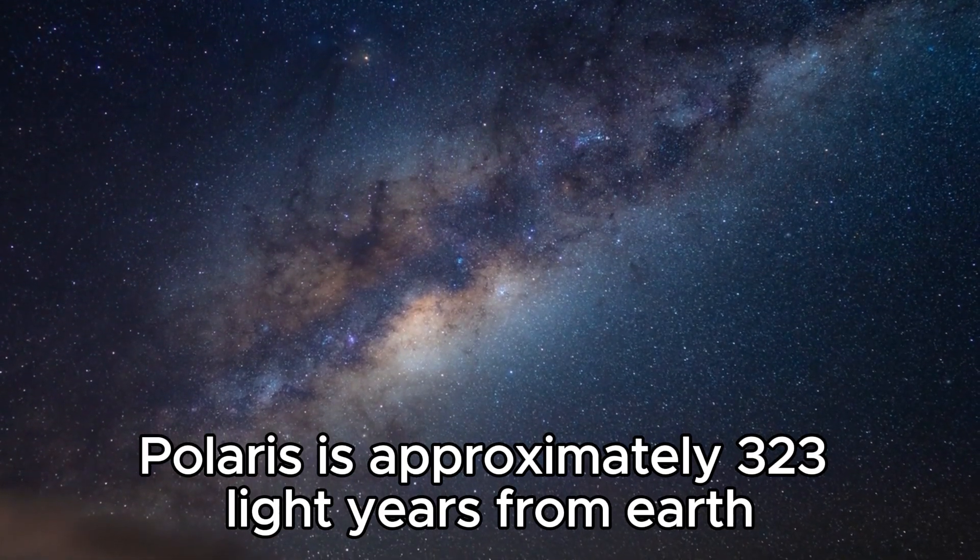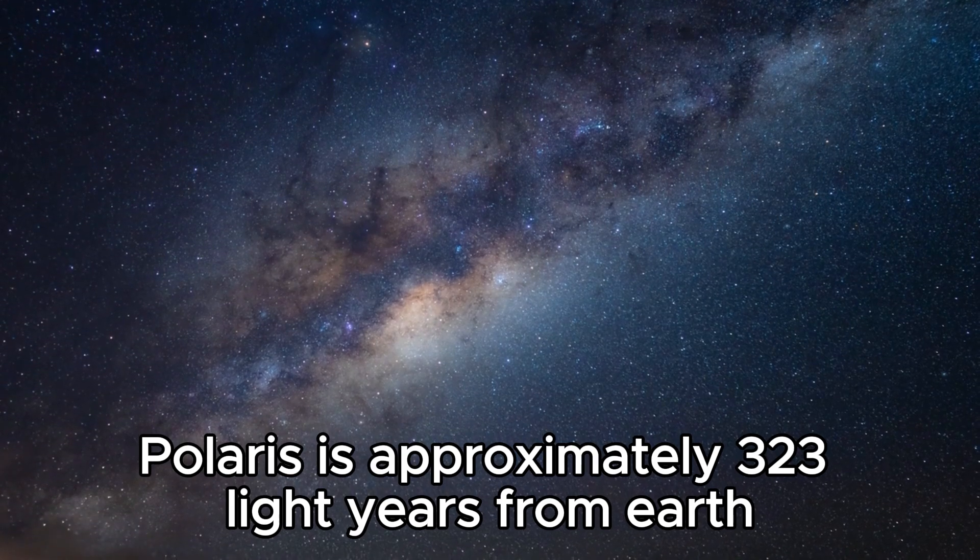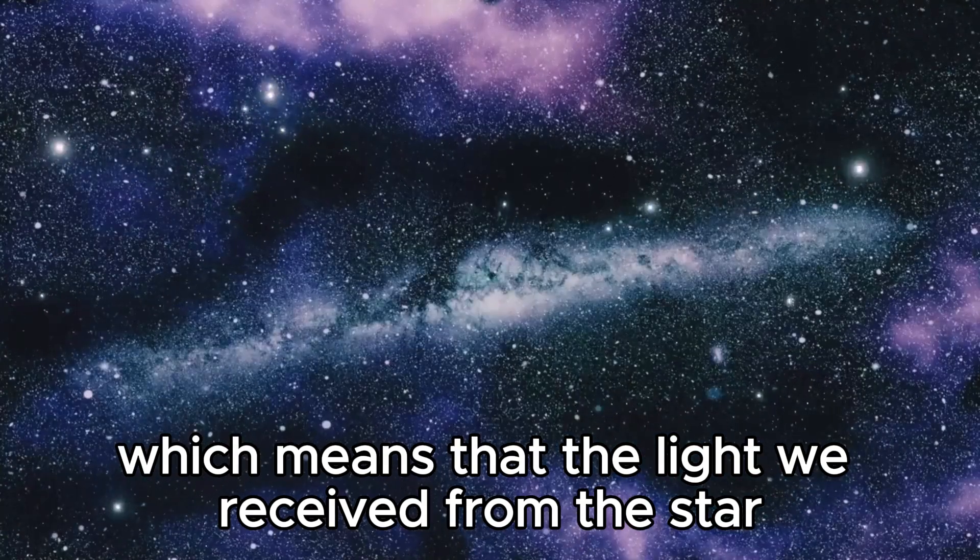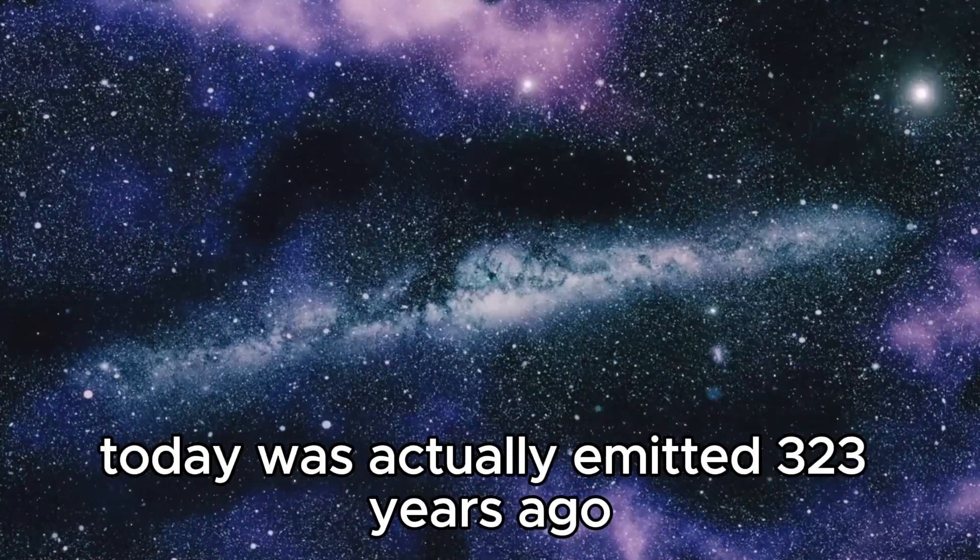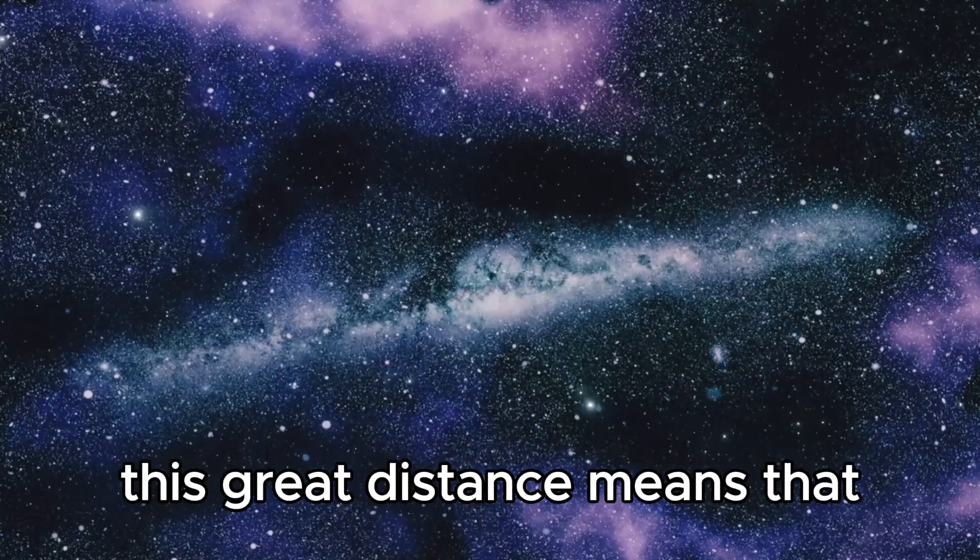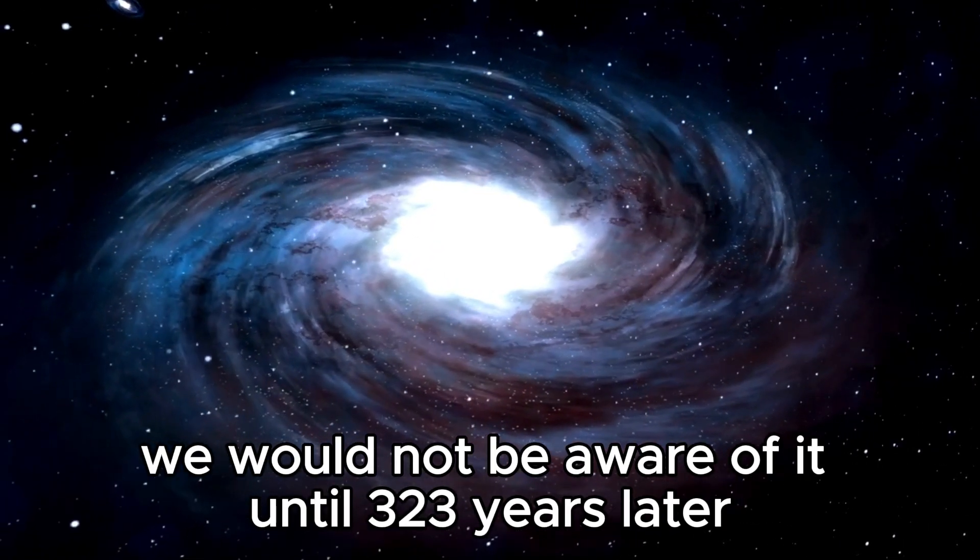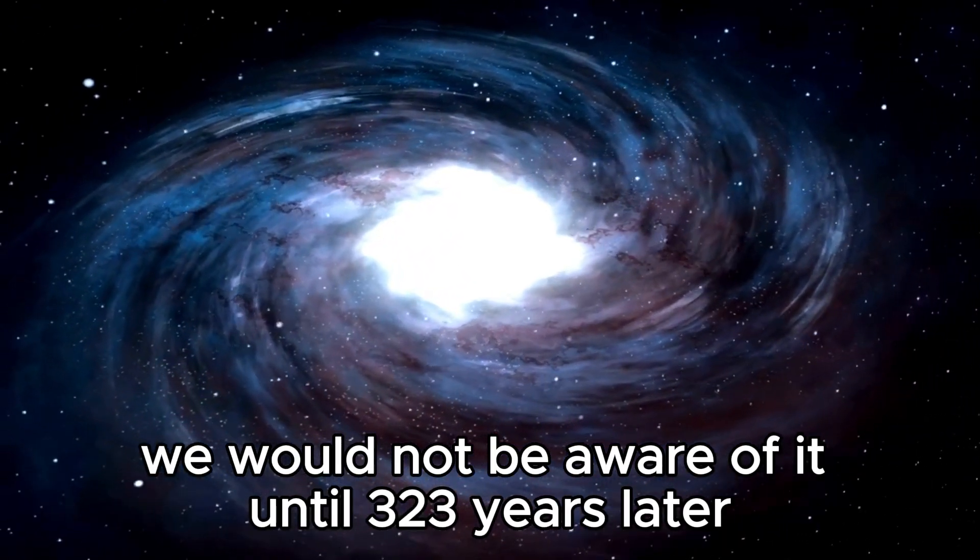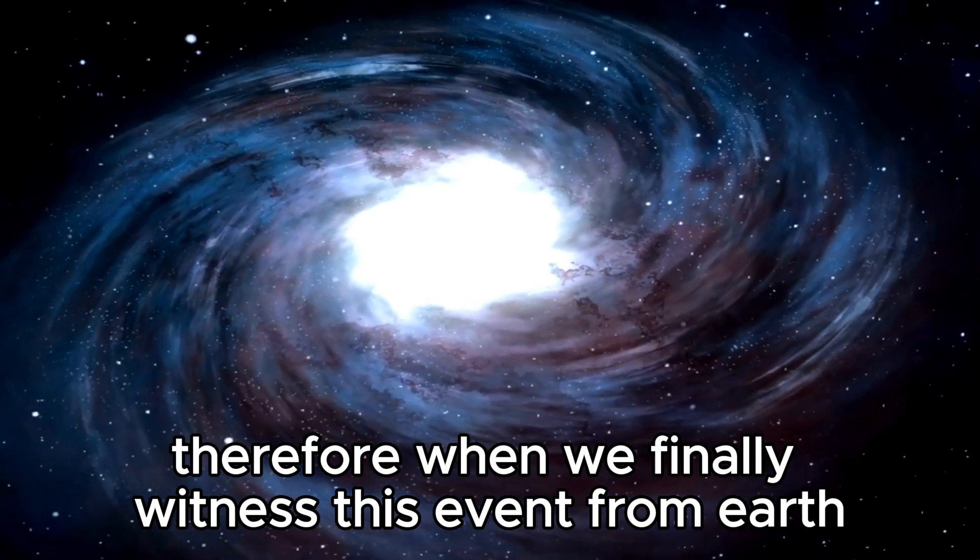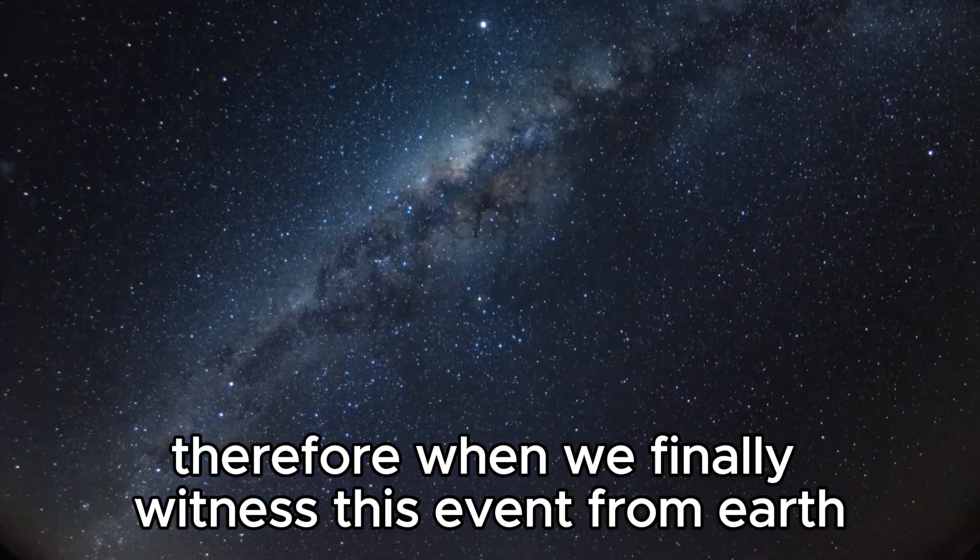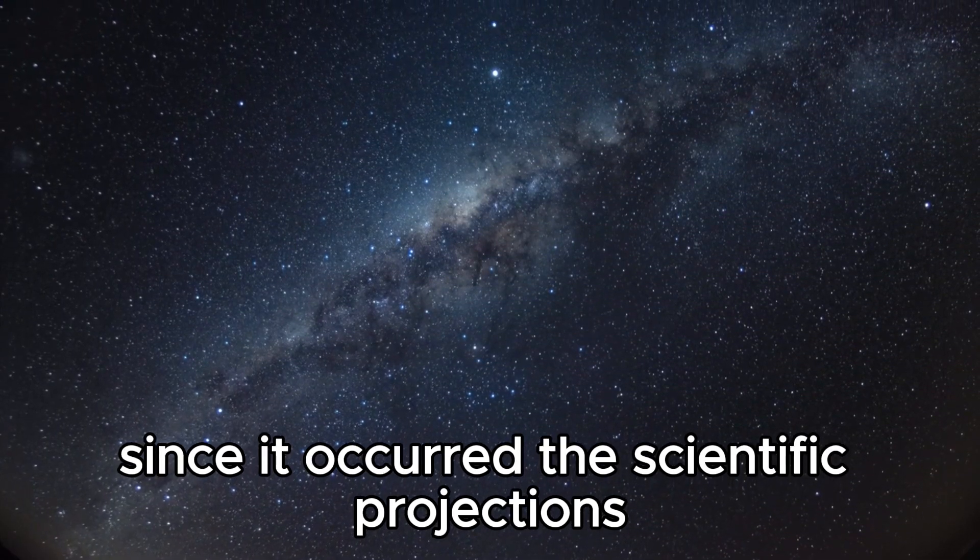Polaris is approximately 323 light-years from Earth, which means that the light we receive from this star today was actually emitted 323 years ago. This great distance means that if Polaris were to explode today, we would not be aware of it until 323 years later. Therefore, when we finally witness this event from Earth, more than three centuries will have elapsed since it occurred.